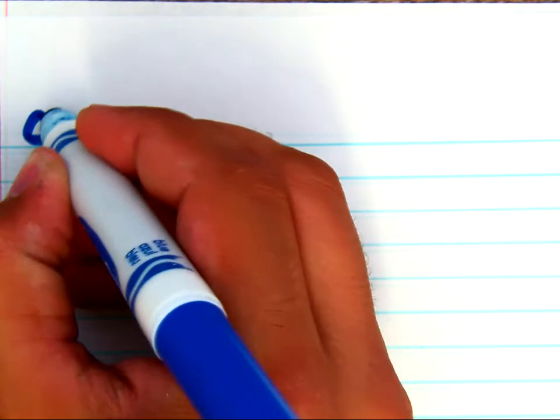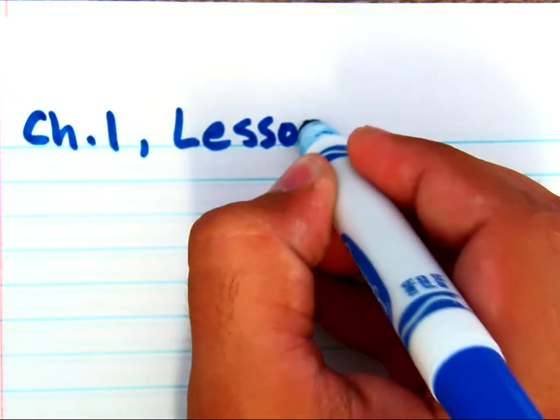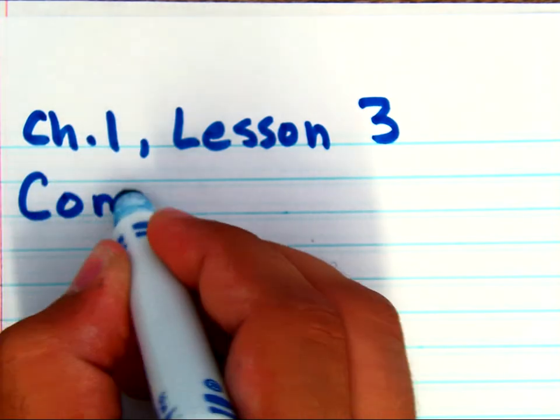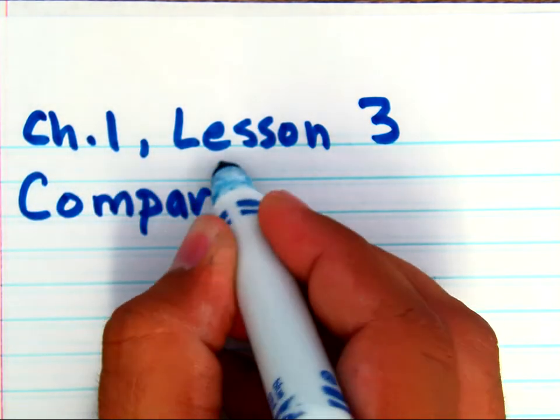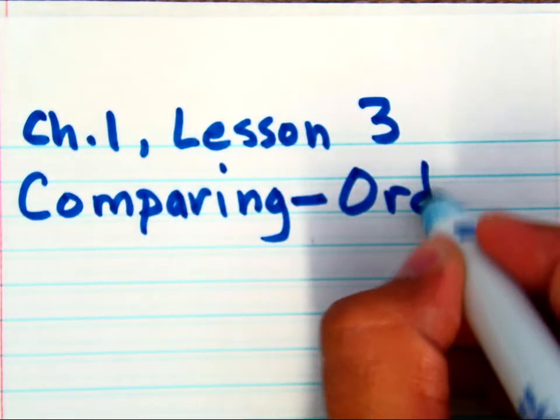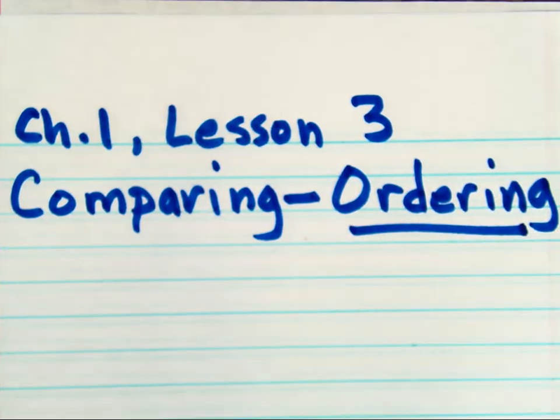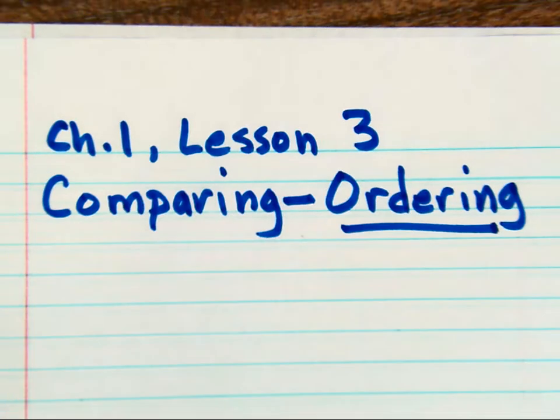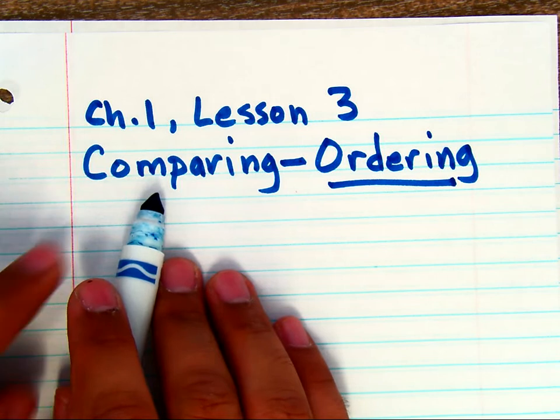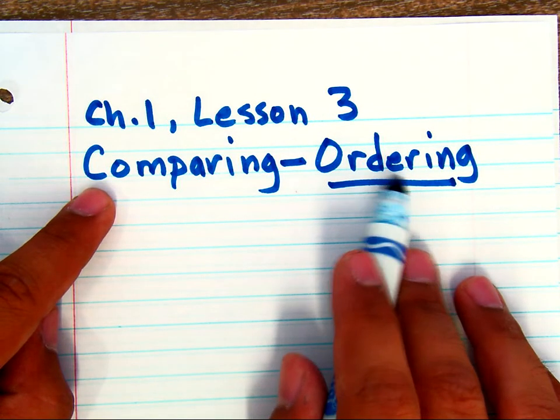Chapter 1, Lesson 3 is all about comparing and ordering. Now in the textbook, it's only going to use the word ordering numbers, but I want to make sure that we're connecting the previous lesson of comparing because you use comparing in order to order numbers.